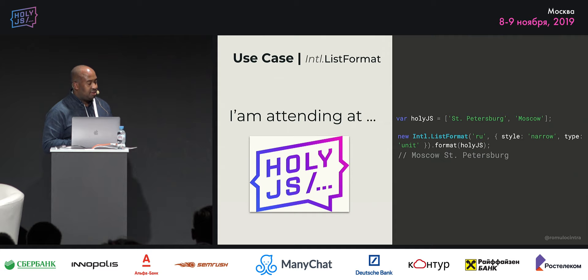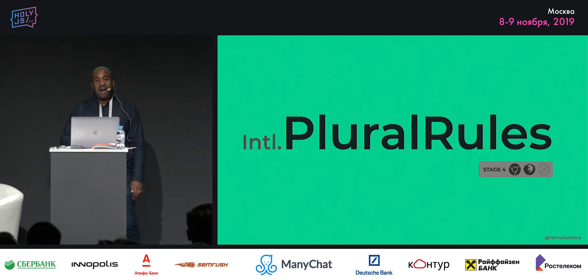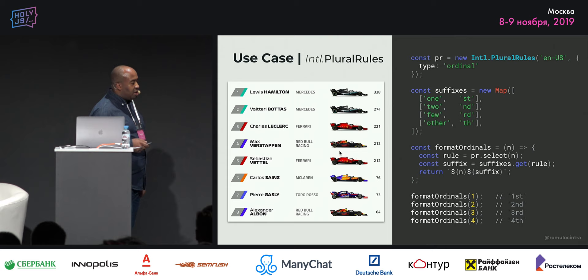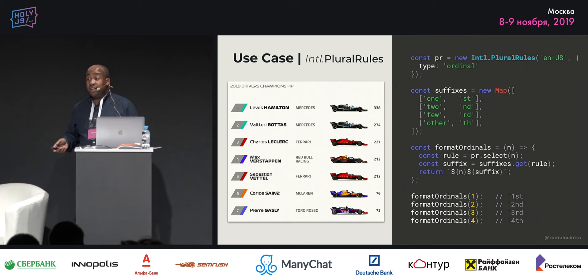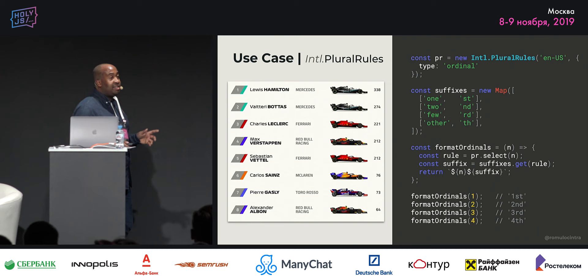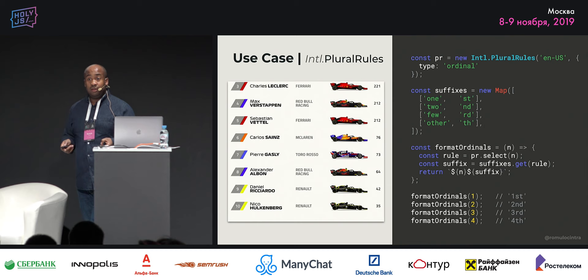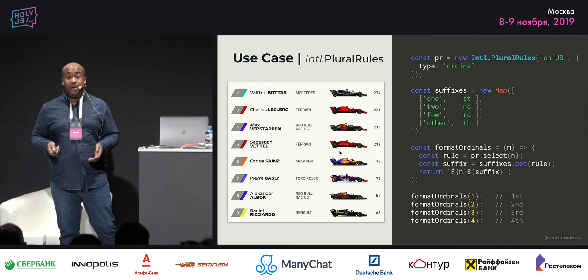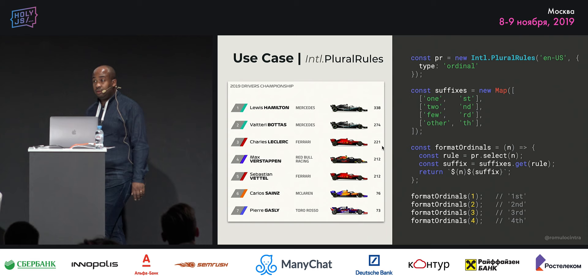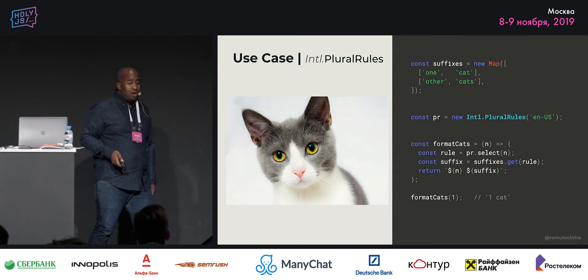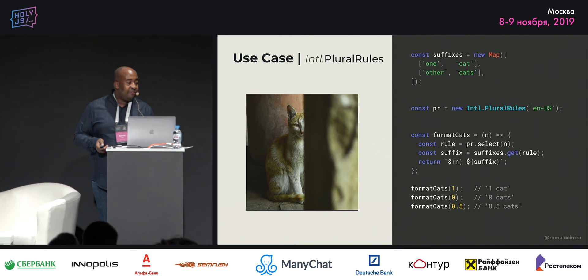We have plural rules — the oldest ones, but nobody uses them. When I see the classification on Formula 1 or soccer, I see one, two, three. No — it's first, second, third. Why don't developers use the APIs to just iterate and do the plurals in the correct way? Like with cats: we have one cat, zero cats, 0.5 cats, 1.5 cats. Easy like that.